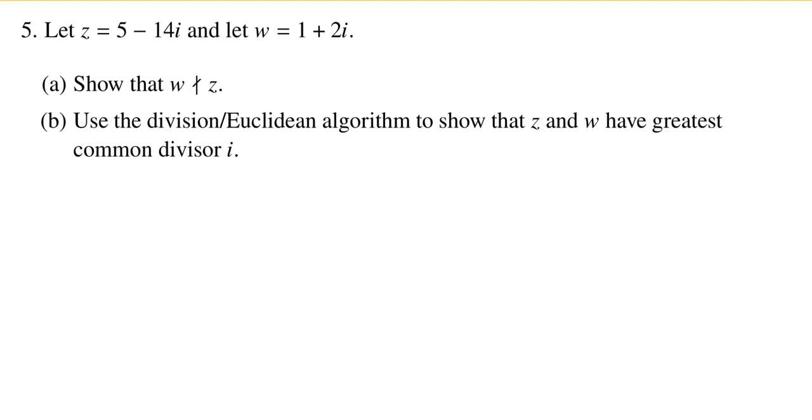Welcome back. This is our video solution to problem five from Super Quiz 3. In this problem, we're given two Gaussian integers, five minus 14i and one plus two i. In the first part, we want to show that w, which is one plus two i, does not divide z, which is five minus 14i.